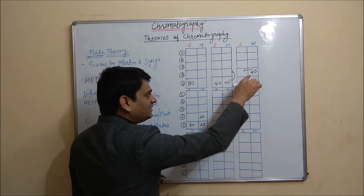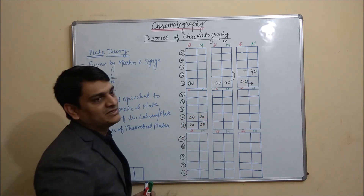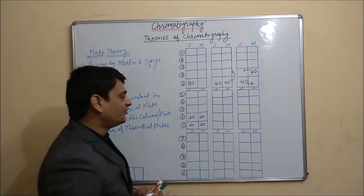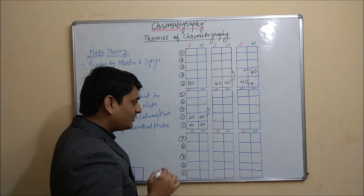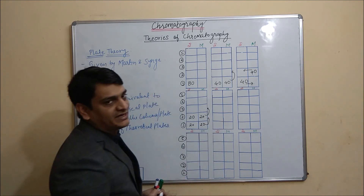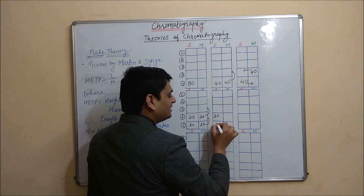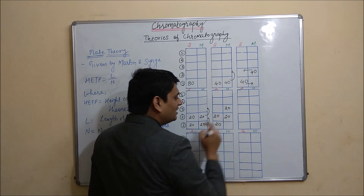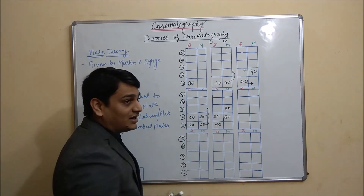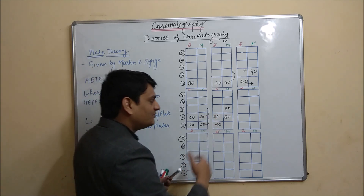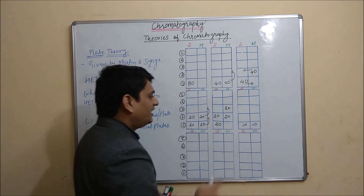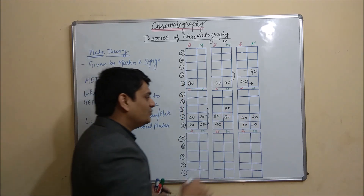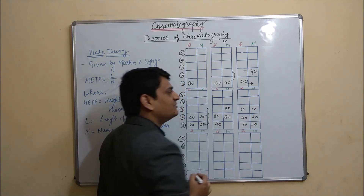20 mg will remain in mobile phase and 20 mg will come again to the stationary phase. Stationary phase is static — not moving — and mobile phase is dynamic — it is moving. So this 20 mg will go to the third plate from the second plate, and this 20 mg will go to the second plate from the first plate. In the third step, equilibrium will occur again: this 20 mg will be divided into 10 mg and 10 mg. The combined 30 mg in the next plate divides — 10 mg will go to the stationary phase and 10 mg will remain in the mobile phase.